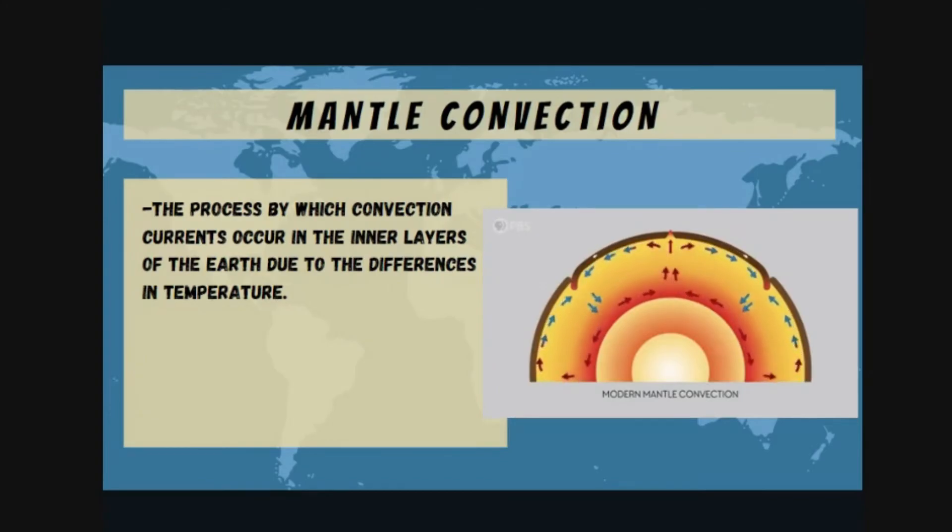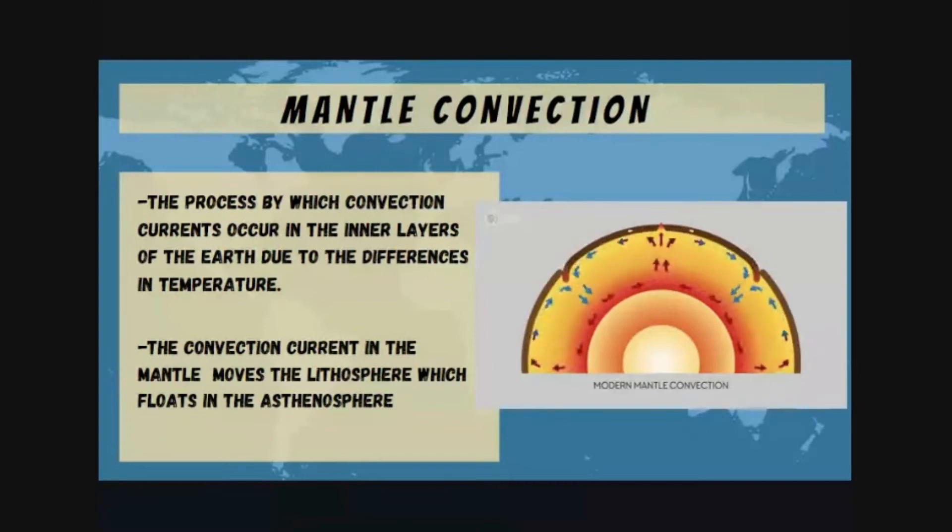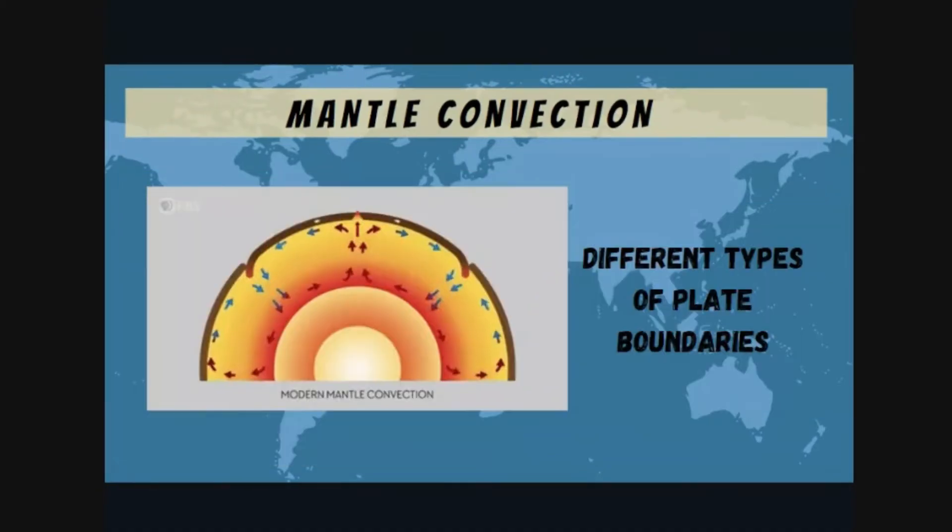Convection current in the mantle moves the lithosphere, which floats in the asthenosphere. Notice the direction of the movement of the arrows. Some arrows move in clockwise direction while the others move in counterclockwise direction. These directions of flow of convection currents lead to the different types of plate boundaries.